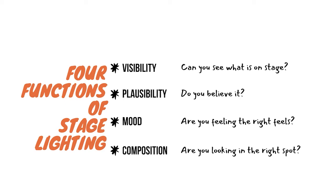The first, and the most obvious one, is visibility. You have to be able to see what's happening on stage. If the stage is completely dark and everything is invisible, then lighting really isn't doing its job. The second function of lighting is plausibility. The question you should ask yourself as an audience is: do you believe what you see on stage? If the sun is supposed to be rising on stage, is the lighting helping you believe that? Does the lighting make the reality of the stage world plausible?